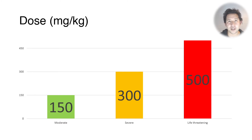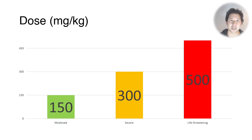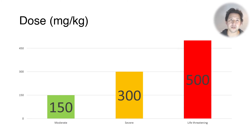You can classify the severity of aspirin overdoses by the dose taken. The one to remember is that aspirin overdoses of greater than 500 milligrams per kilo are potentially lethal.